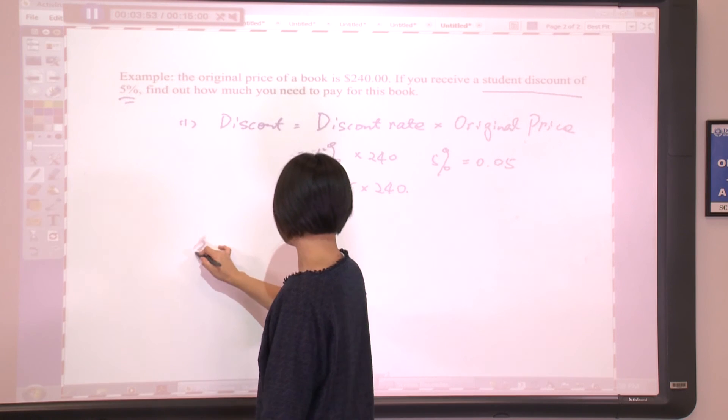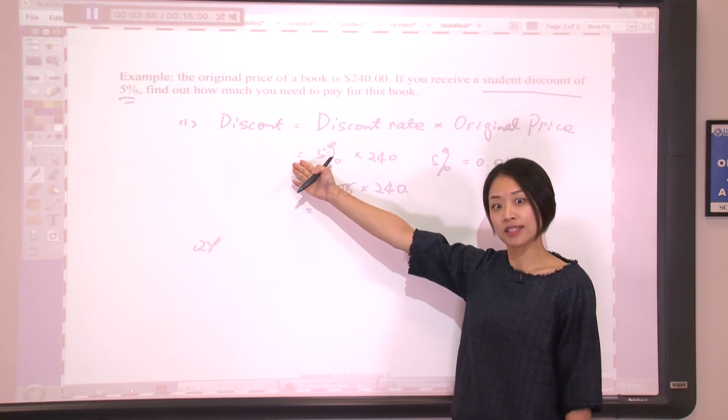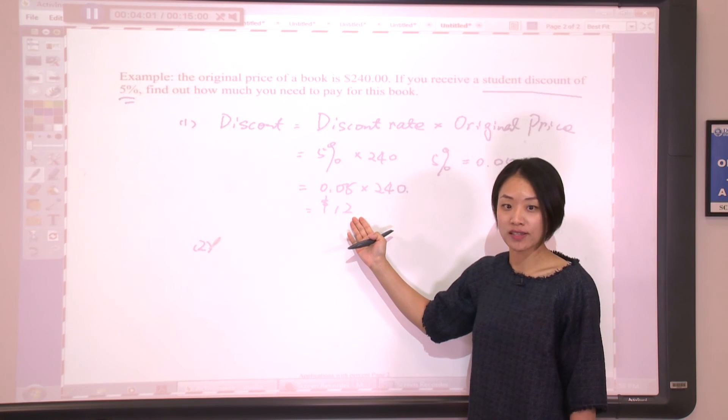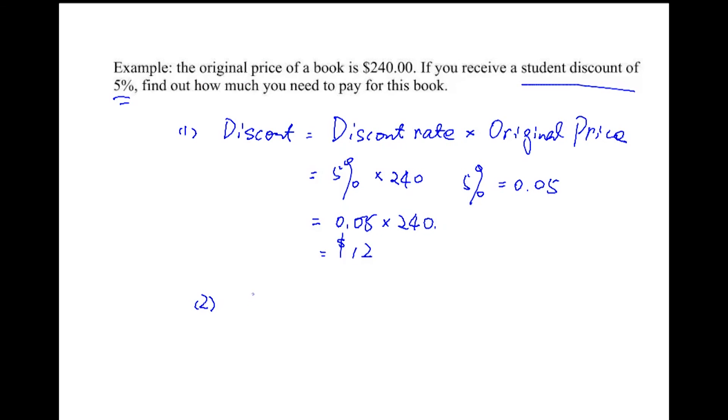Next, we need to find out how much you need to pay. Since this is a discount, this amount is subtracted from the original price. The final answer would be the original price minus discount, which is $240 minus $12. So the final price you need to pay would be $228.